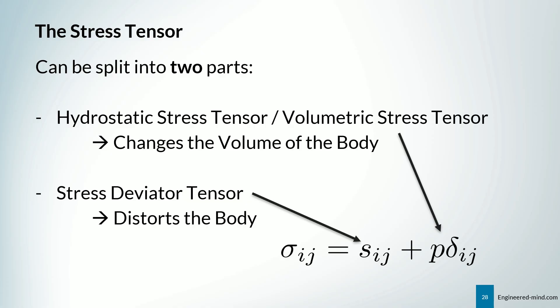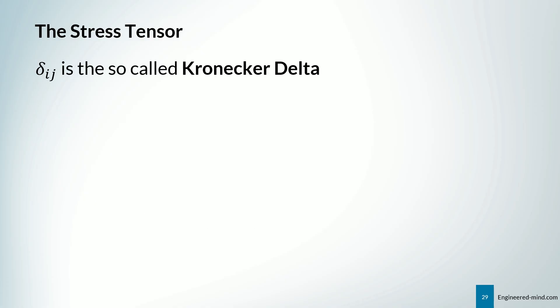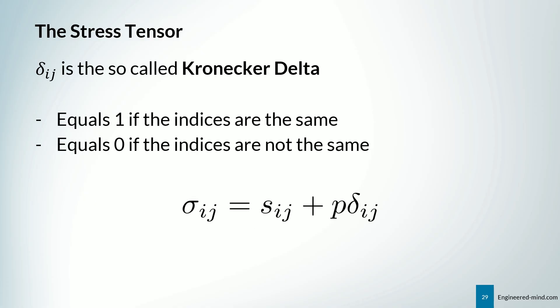Now you might ask, what is this delta ij? This is the so-called Kronecker delta. And it equals one if the indices are the same. And it equals to zero if the indices are not the same. So if we have delta 11, P stays in the equation. If we have delta 22 and delta 33, the same happens. But if we have delta 12, for instance, then the pressure in the stress tensor vanishes.